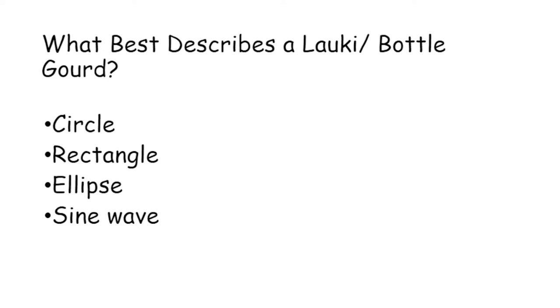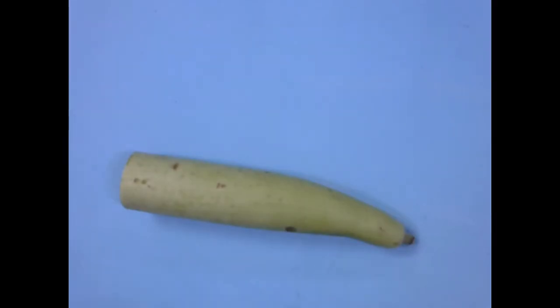So to start with let me ask you a very interesting question. How would you best describe a locky or what we call a bottle gourd? Would you call it a circle, a rectangle, an ellipse or a sine wave? And to understand this let's take a look at the locky we have.